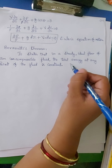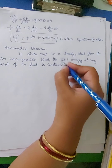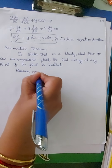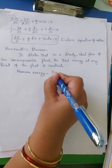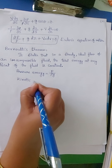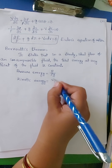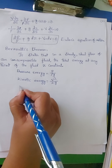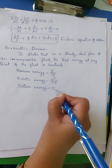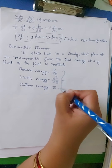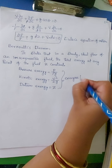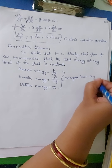What is the total energy? These energies per unit weight of the fluid are: first, pressure energy, which equals P divided by rho times G. Next is kinetic energy, which equals V squared divided by 2G. Next is datum energy, which equals Z. These three are the energies per unit weight of the fluid.